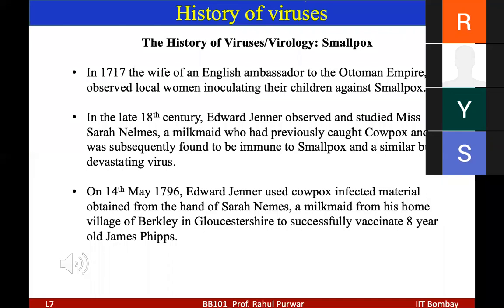Edward Jenner concluded that if he used cowpox-infected material — essentially the virus — and vaccinated other individuals with it, they would not develop smallpox disease since the natural host is the cow. Humans would not develop disease but would get vaccinated, and because of the similarity between cowpox and smallpox viruses, they would develop a good immune response against smallpox.